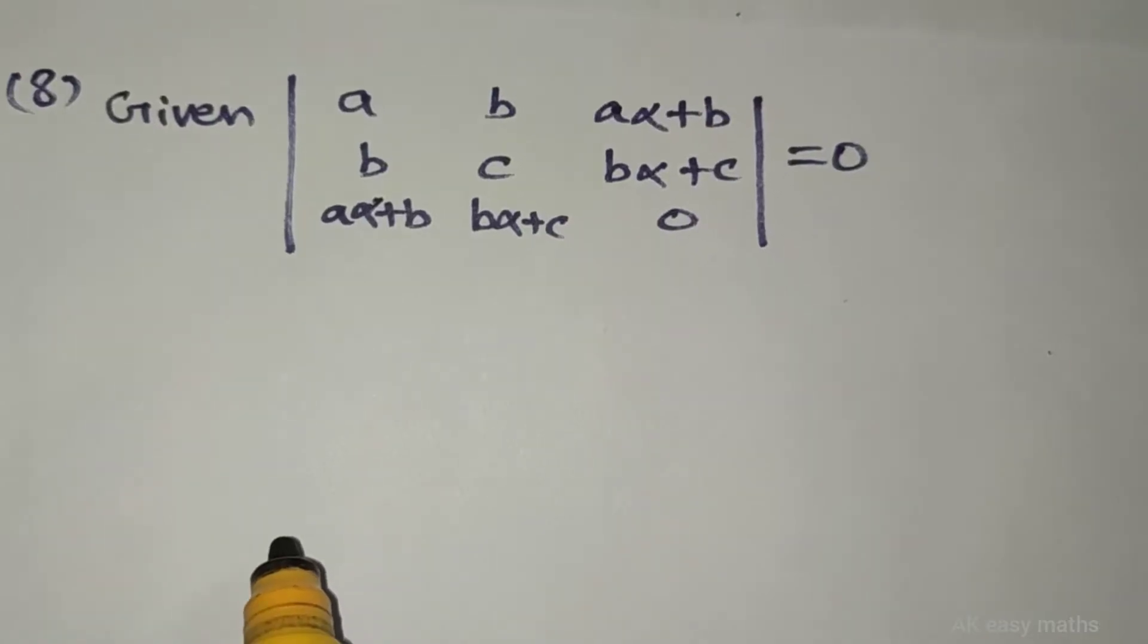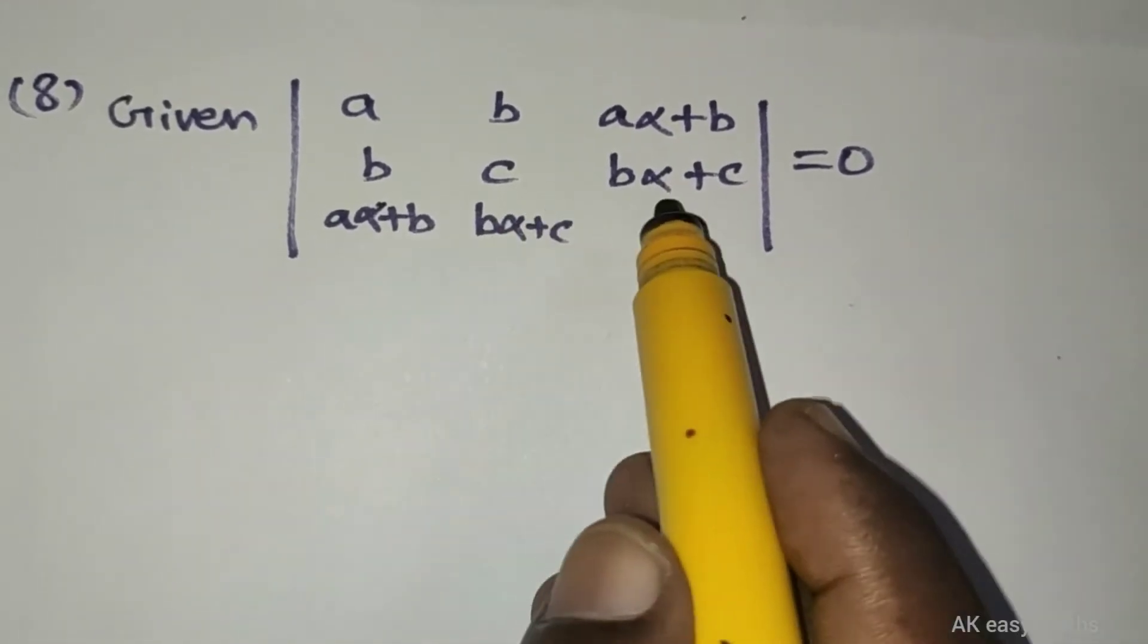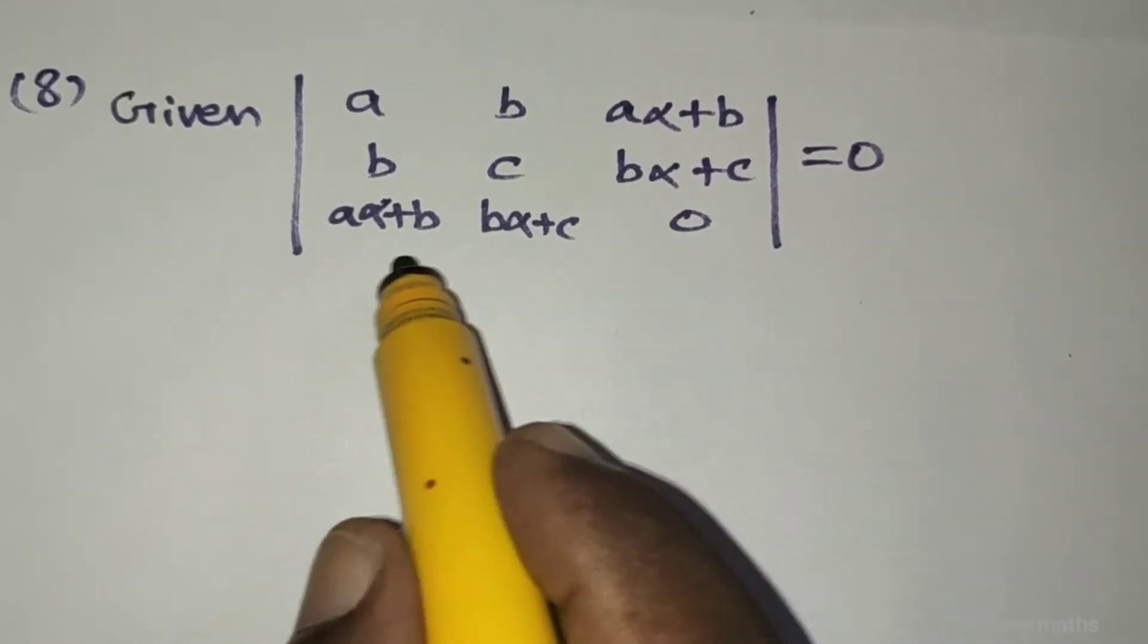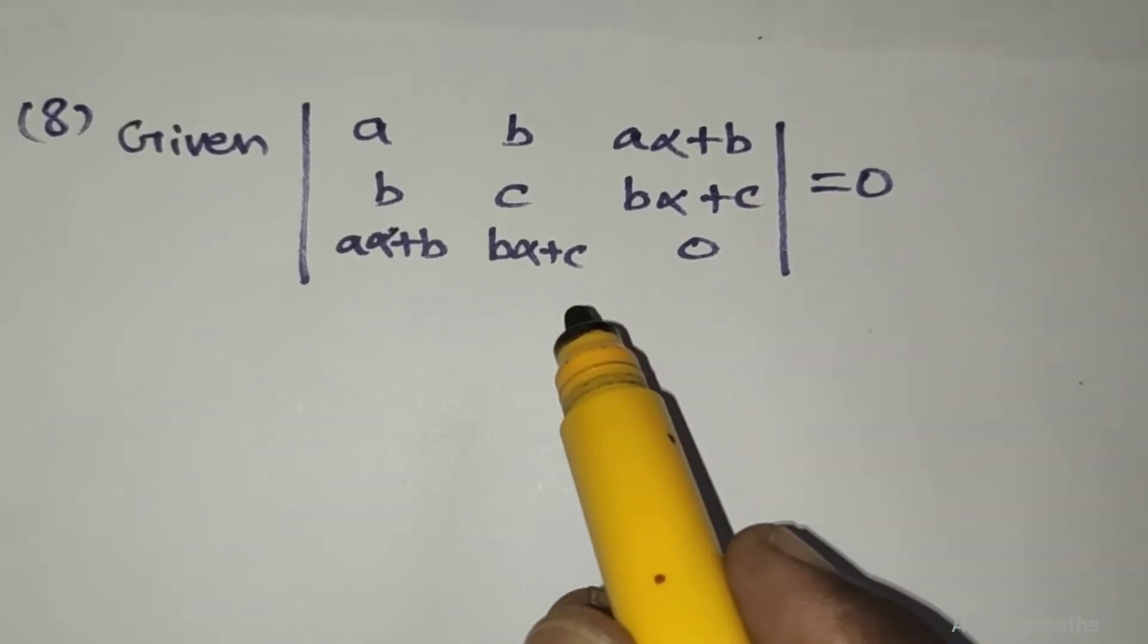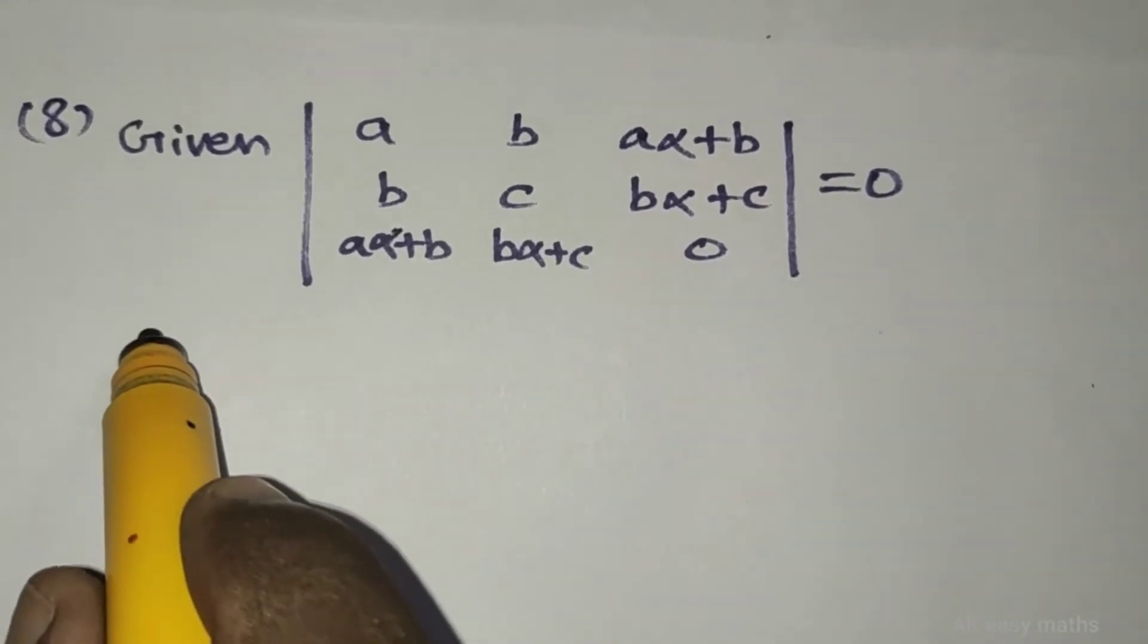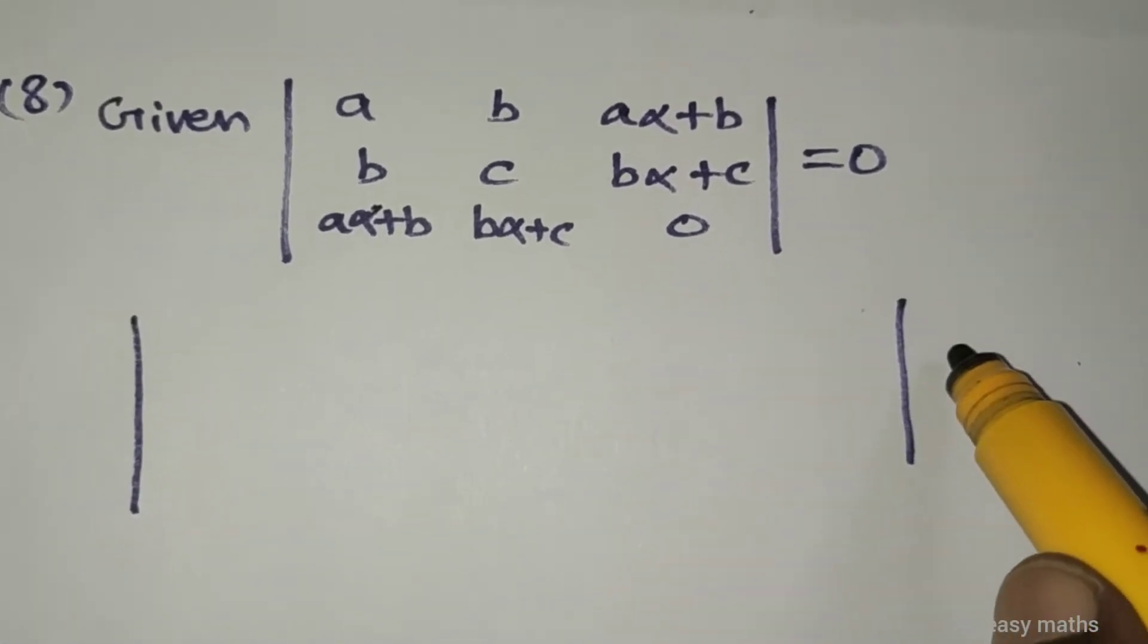Question number 8, given the determinant: a, b, a alpha plus b; b, c, b alpha plus c; a alpha plus b, b alpha plus c, 0 equal to 0. Now consider the determinant equal to 0.